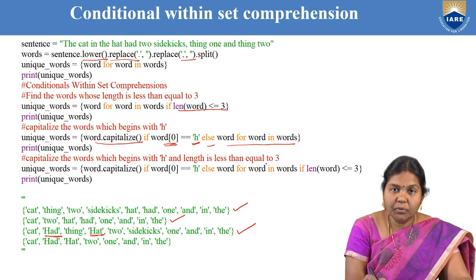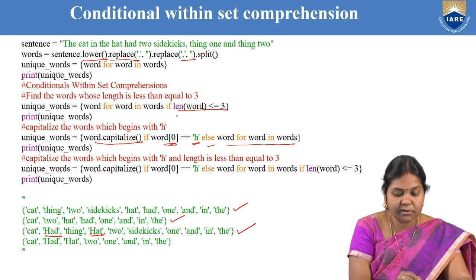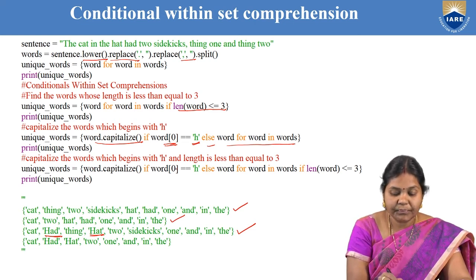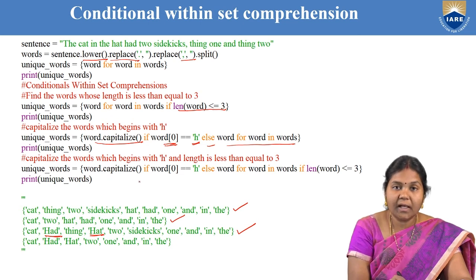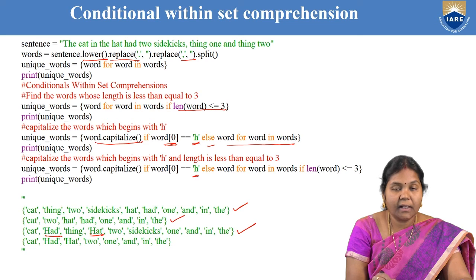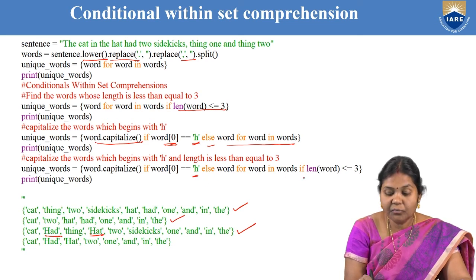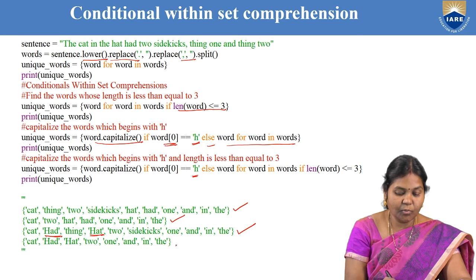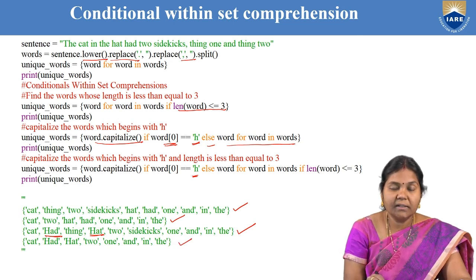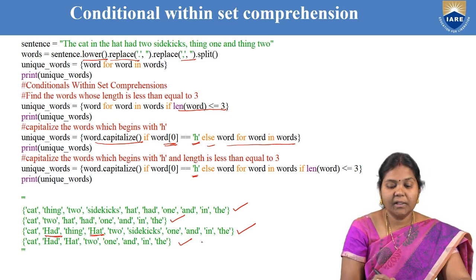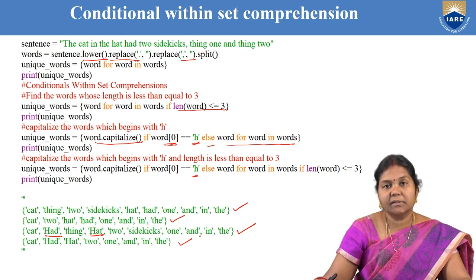Similarly, we can combine both conditionals and write multiple conditions in set comprehension. For example, capitalize words which begin with H and whose length is less than or equal to 3. The syntax combines both: {word.capitalize() if word[0] == 'H' else word for word in words if len(word) <= 3}. In the output you can see only words whose length is less than or equal to 3, and words starting with H are capitalized.